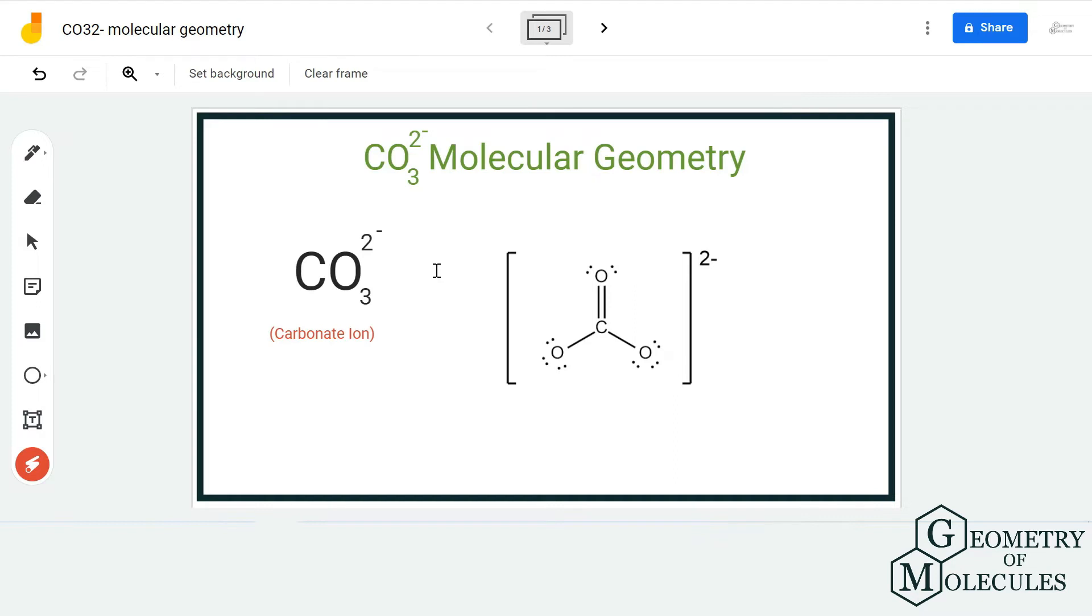This is the Lewis structure of CO3^2- ion, in which the carbon atom is forming two single bonds with two oxygen atoms and a double bond with one oxygen atom. The structure is quite simple.